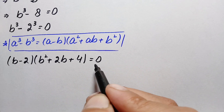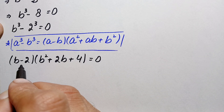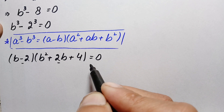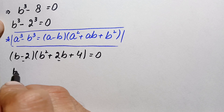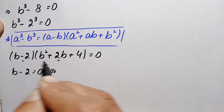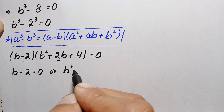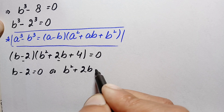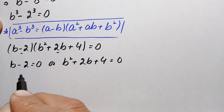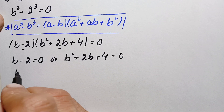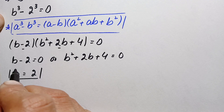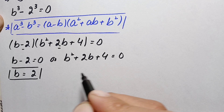Since the product of these two expressions is zero, either the linear expression is zero or the quadratic expression is zero. From the linear factor, b minus 2 equals zero, or b squared plus 2b plus 4 equals zero. Solving the linear equation gives us b equals 2, which is our first real solution.